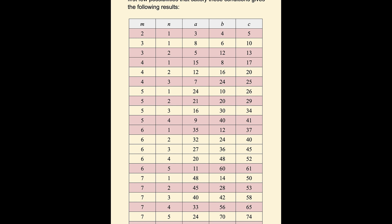I've indicated all the primitive ones with pink backgrounds. So you can see it generates a lot of different Pythagorean triples. Every row is unique, but some are primitives and some are not primitives.